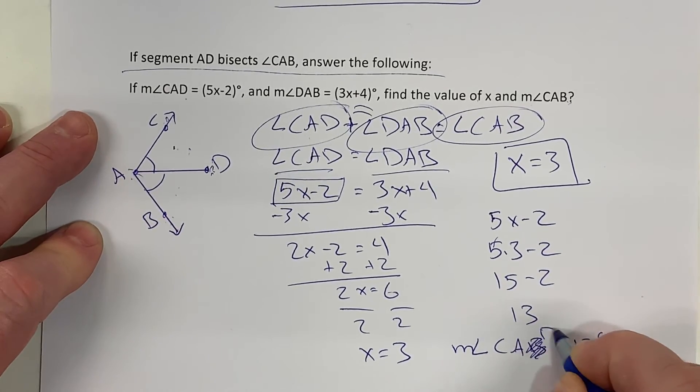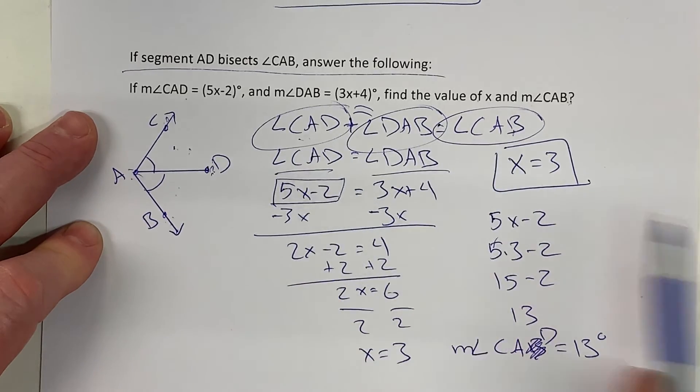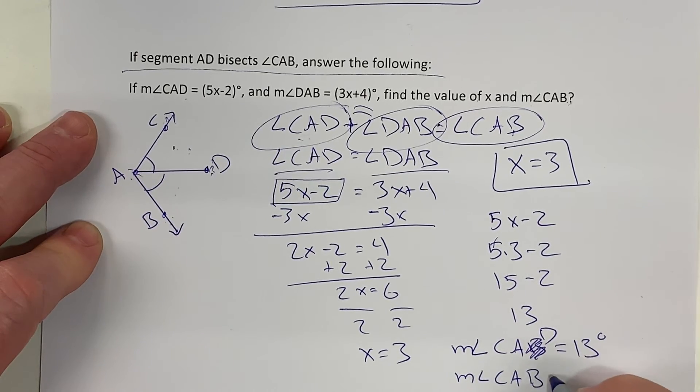So the measure of angle CAD equals 13 degrees, and CAB is going to be double that. So the measure of angle CAB equals 26 degrees.